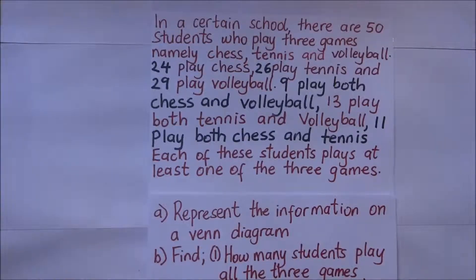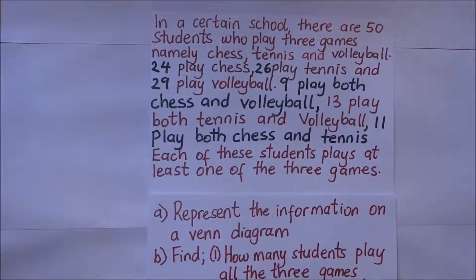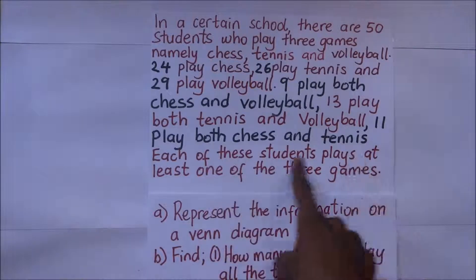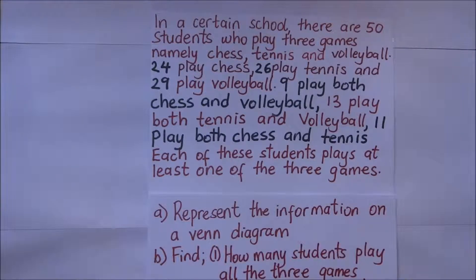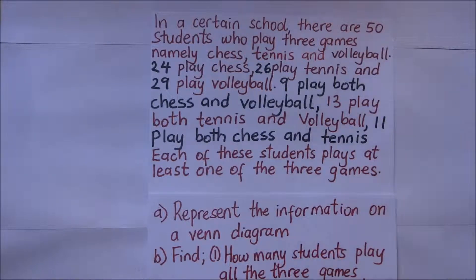In a certain school there are 50 students who play three games. We're now dealing with three games, namely chess, tennis, and volleyball. 24 play chess, 26 play tennis, and 29 play volleyball. 9 play both chess and volleyball, 13 play both tennis and volleyball, 11 play both chess and tennis. Each of these students plays at least one of the three games, meaning all 50 students play at least one game.